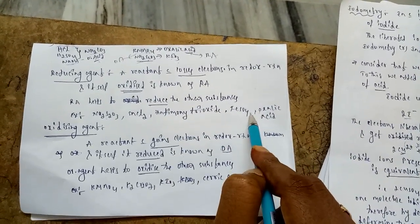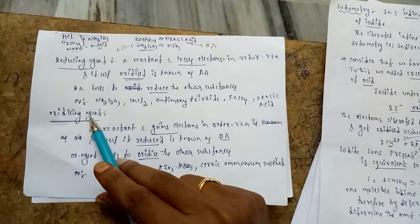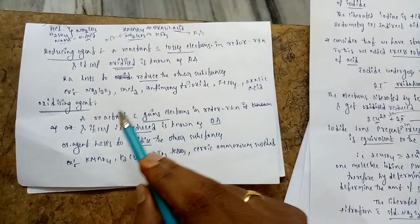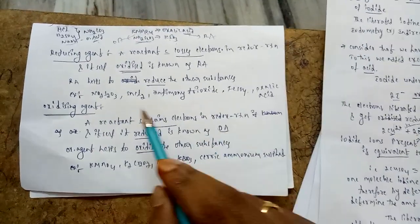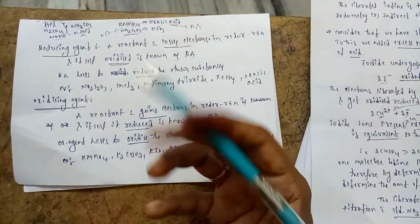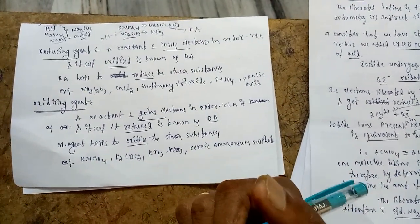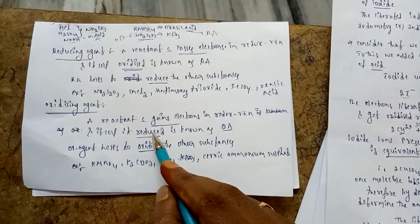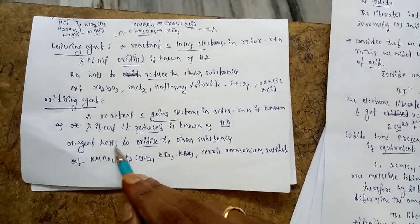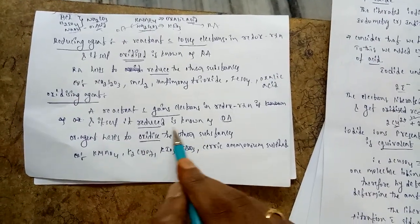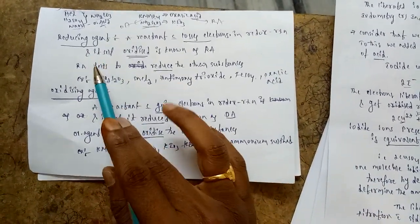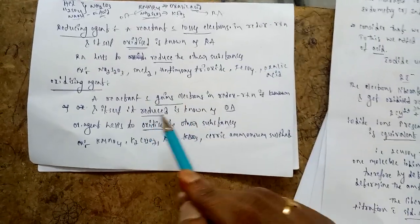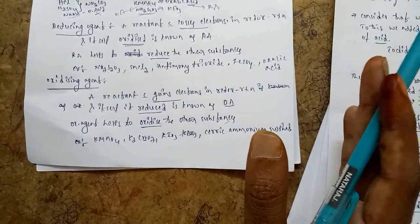Oxidizing agent: a reactant which gains electrons in a redox reaction and itself is reduced is known as an oxidizing agent. It is able to gain electrons in a redox reaction. Gaining of electrons is nothing but reduction. Oxidizing agent helps to oxidize the other substances — same like how reducing agent helps to reduce other substances. After oxidation, electrons are liberated and gained by the oxidizing agent, which itself undergoes reduction.